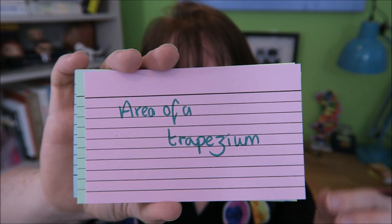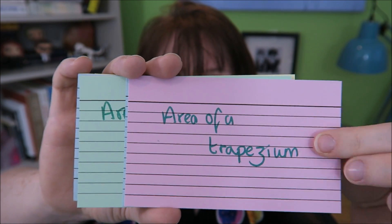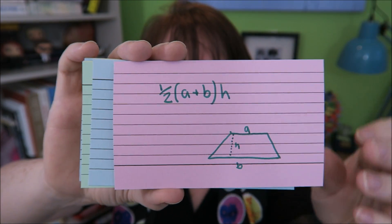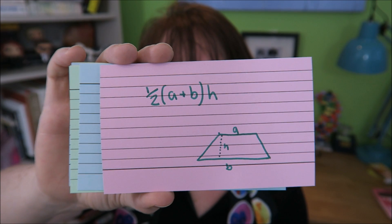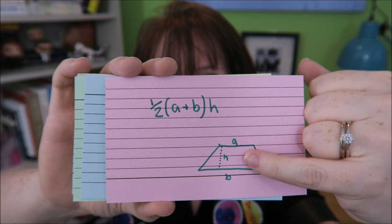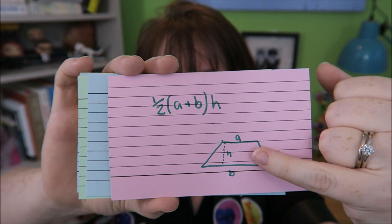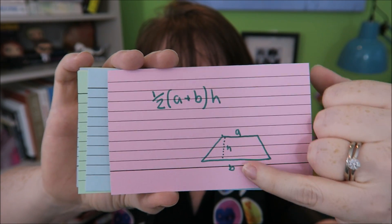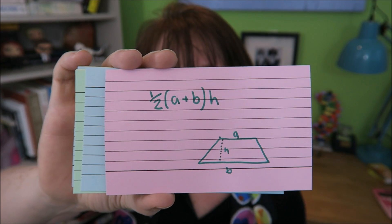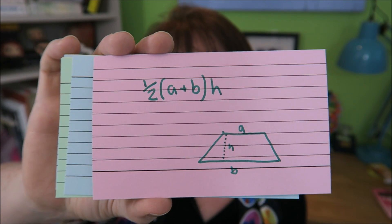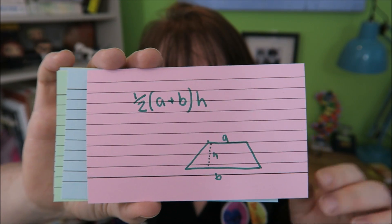The area of a trapezium. This is going to be half times (A plus B) times the height. Notice how A and B are in brackets, so you need to do those bits first.